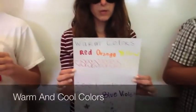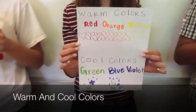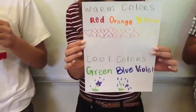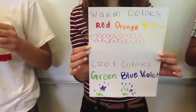Warm and cool colors: warm colors are colors closer to the yellow to red side of the color wheel, and cool colors are closer to the blue to the purple side of the color wheel.